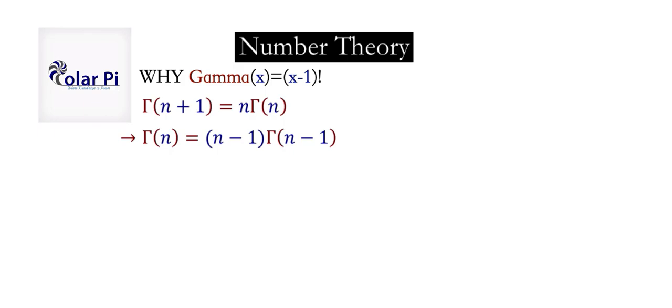And proceeding similarly, we see that gamma of n minus 1 in turn is equal to n minus 2 times gamma of n minus 2. And I'm not going to show it, but gamma of n minus 2 will in turn equal n minus 3 times gamma of n minus 3.